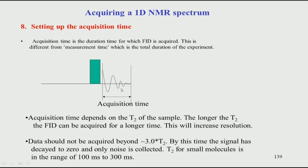In the previous class we saw that we need a rough idea of T1 to set up the relaxation delay. In this case we also need to know the T2 of the sample. We need to know both T1 and T2 for recording any NMR experiment. Remember, T2 is something you may not know exactly for your sample — it may be a new compound every time you record. Based on the size of the molecule, the T2 values can typically be predicted.